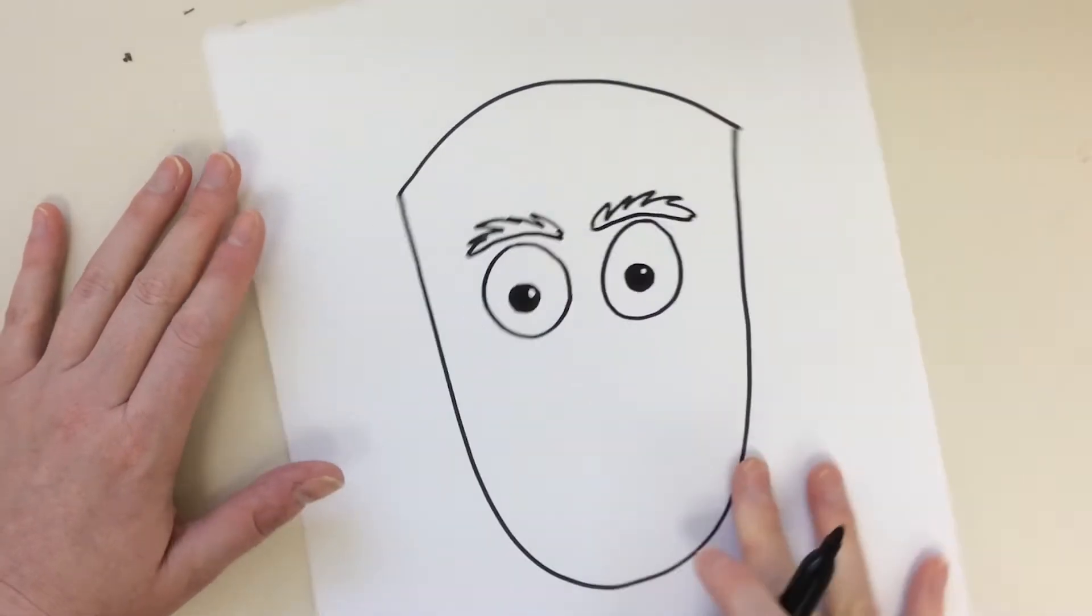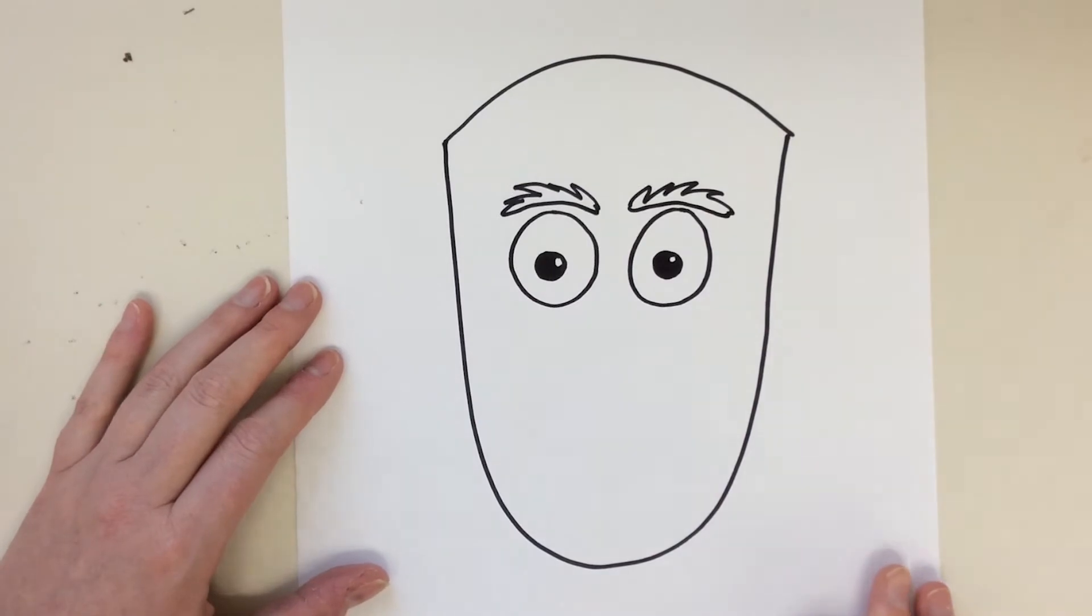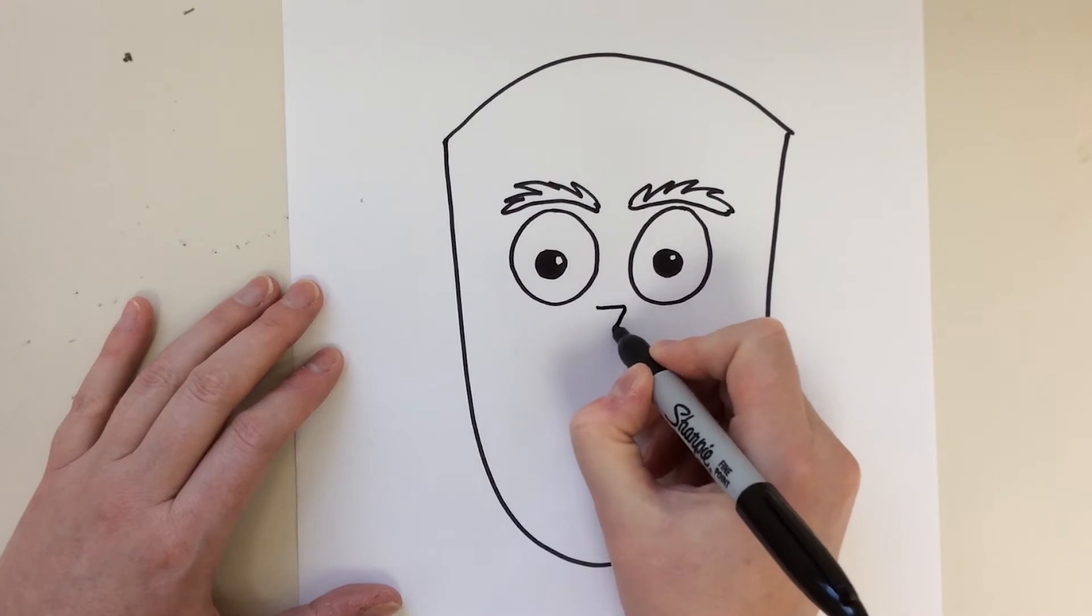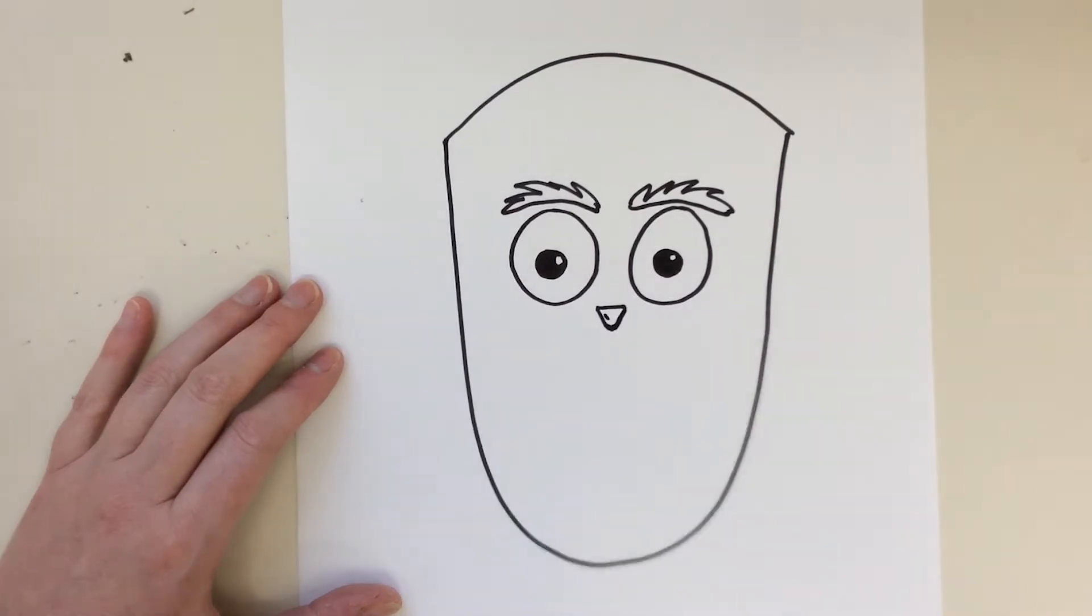Now we need his beak, and we're going to use that triangle shape. I want a little detail, so I'll make a little detail. Aww, he's looking so cute already!